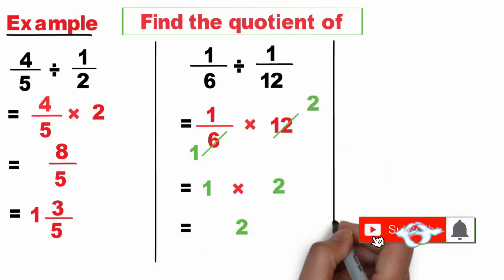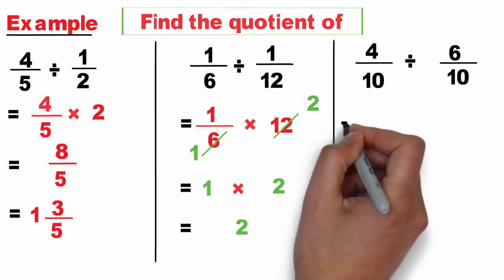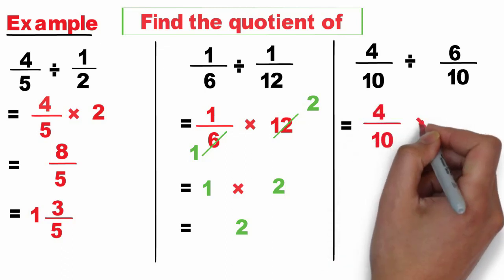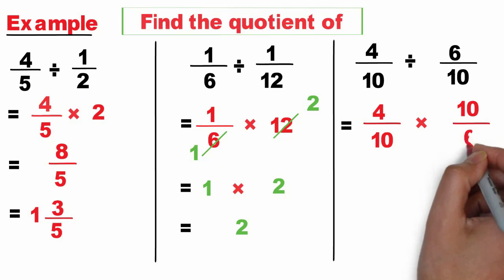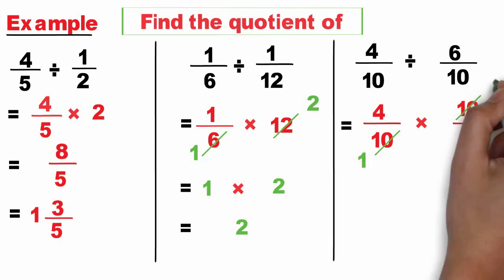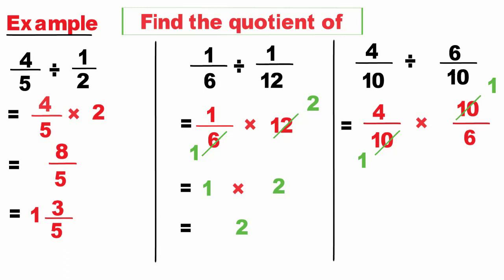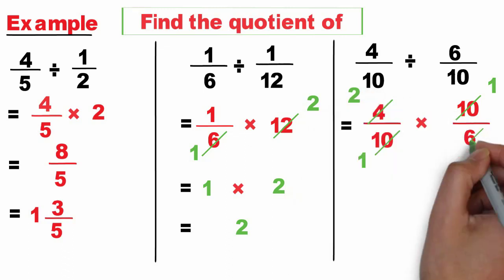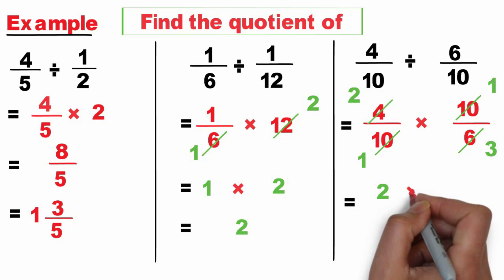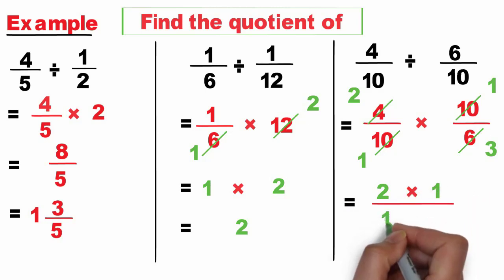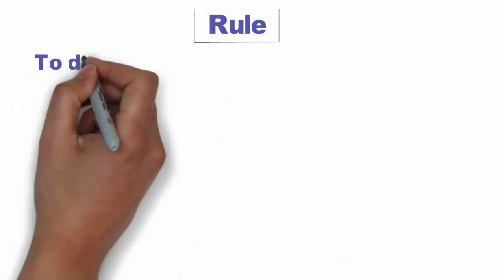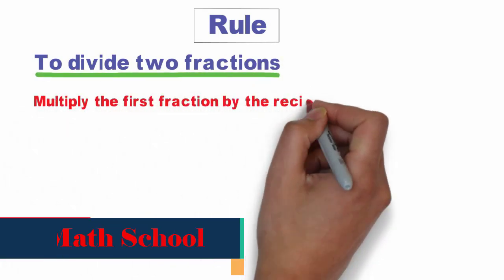Next: 4 over 10 divided by 6 over 10. Multiply the first fraction by the reciprocal of the second: 4 over 10 times 10 over 6. Cancel out common factors: divided by 10 equals 1, divided by 10 equals 1. Also, 4 and 6 are divisible by 2: divided by 2 equals 2, divided by 2 equals 3. Multiply remaining factors: 2 times 1 over 1 times 3. The quotient equals 2 over 3.